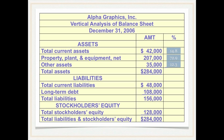Those percentages you just calculated should add up to 100 percent — because of rounding error ours may not, but it should be pretty close. Now we'll do the same thing with liabilities and owner's equity. Don't get confused — you do not divide total current liabilities by total liabilities; you divide by the 284,000. It's the same base number.